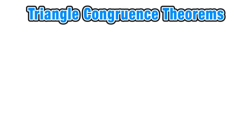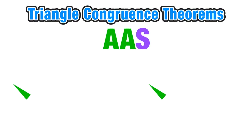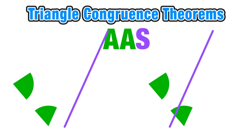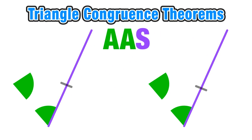For the angle-angle-side triangle congruence theorem, we still have two angles and one side — it's just the order that's going to change. In both triangles we have one congruent angle, then another congruent angle, and then our congruent side comes after those two consecutive angles.